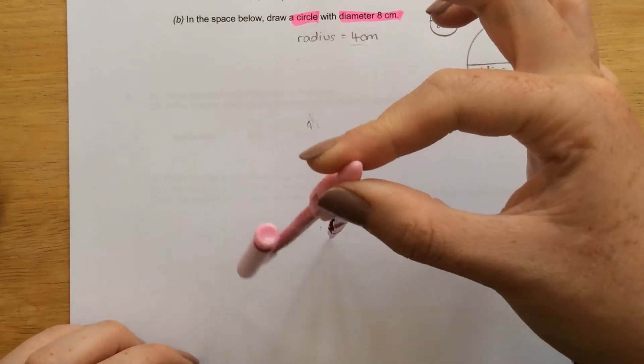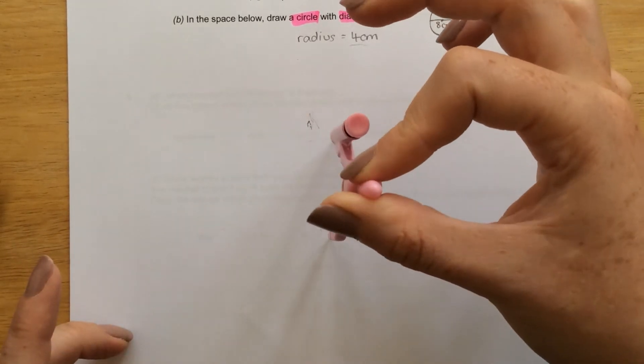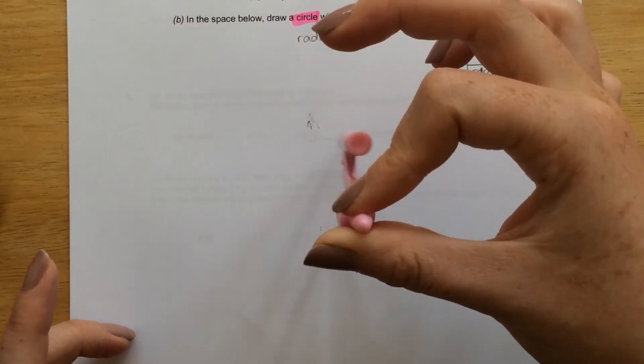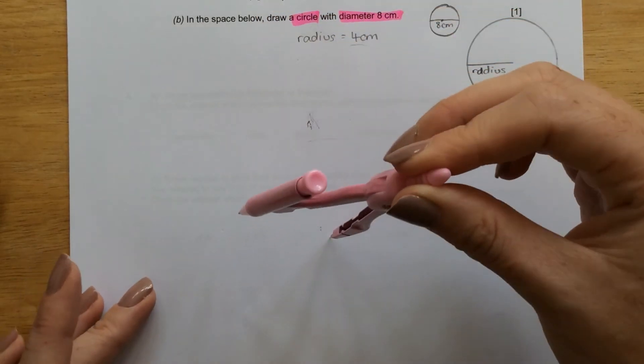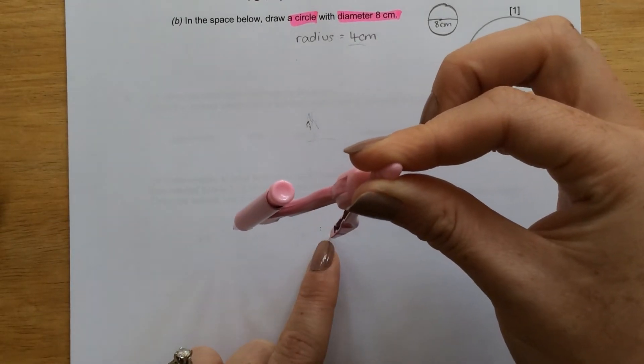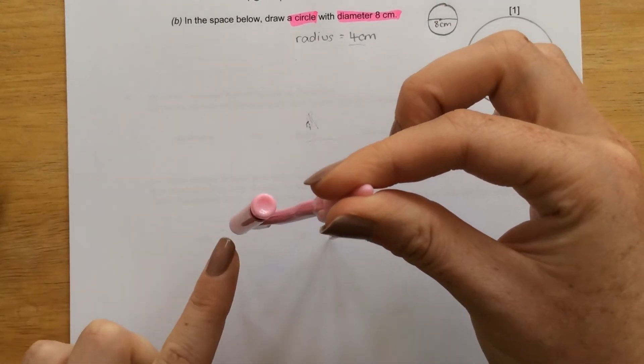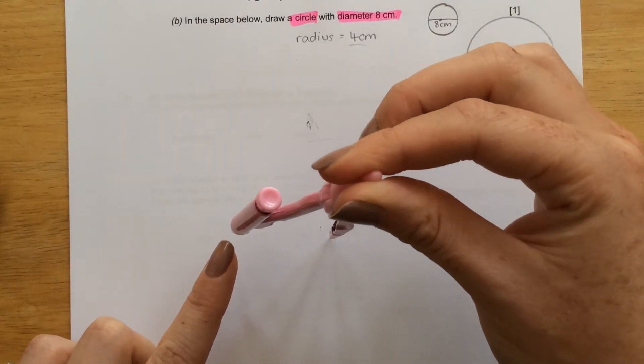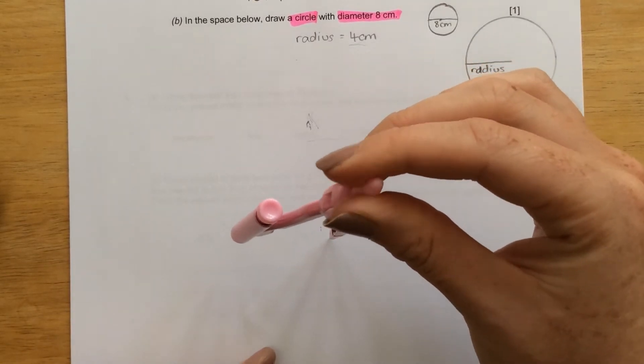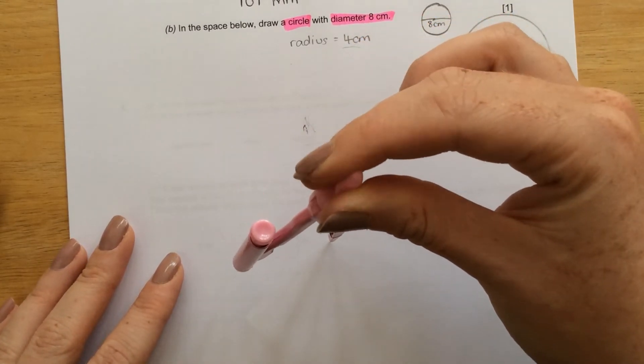This just takes a bit of practice to get used to. So at the minute, my pencil is not touching the paper. However, I'm just practising being able to turn the compass all the way around with these fingers. So now I'm putting pressure on this point, so this point doesn't move. Again, I'm not touching the pencil, because otherwise the distance between here and here will no longer be 4 centimetres, which is what we need.